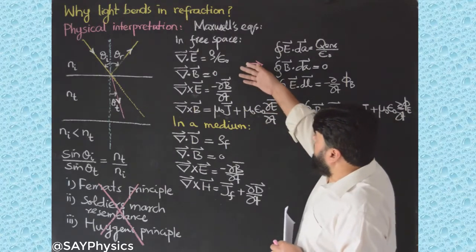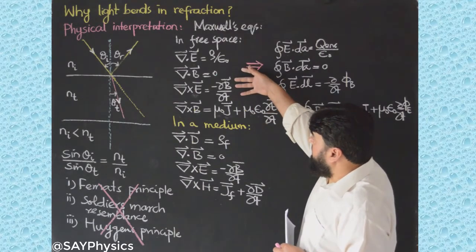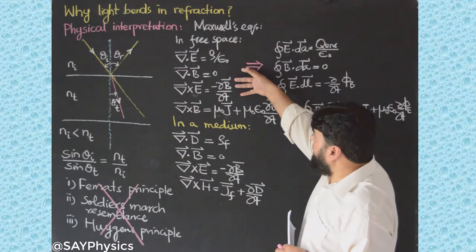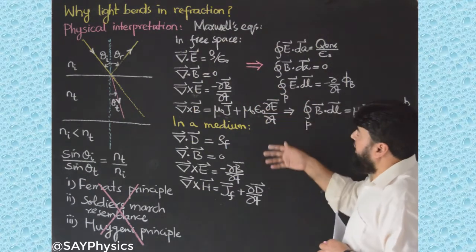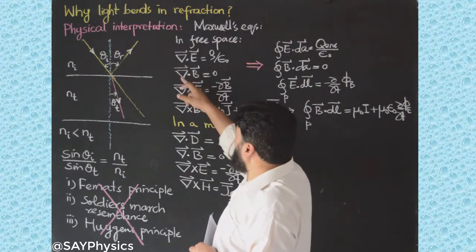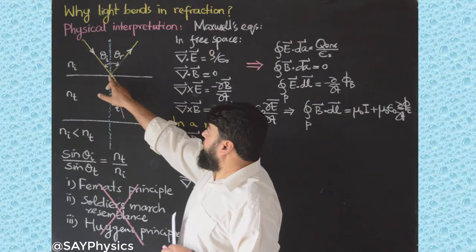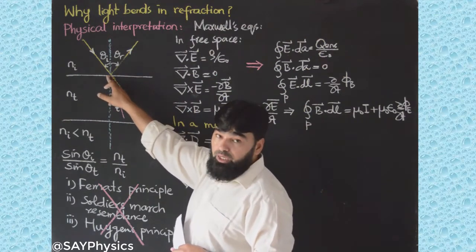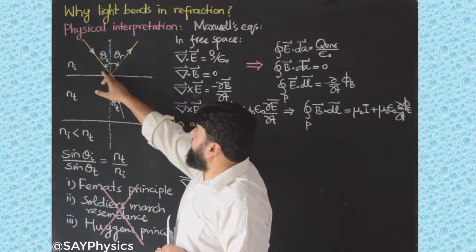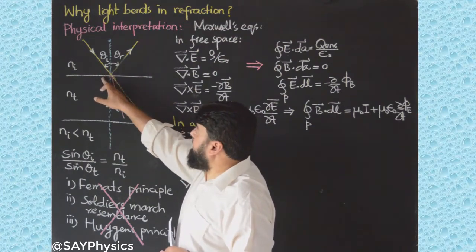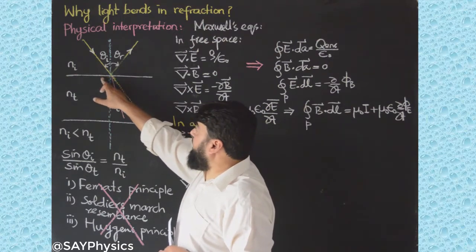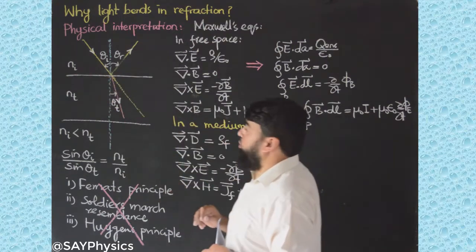I will only focus on the free space equations, and when electromagnetic waves following these equations hit this boundary — the boundary shared between the free space and the medium — we will have to apply boundary conditions.